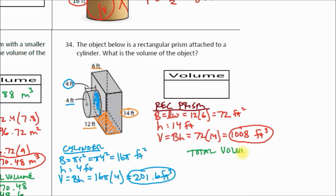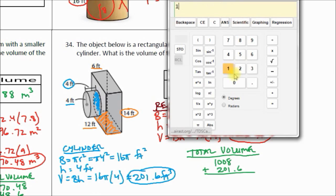In this case, our total volume, we're not subtracting now, we're adding, because we're not taking anything away. We're putting two known shapes together. So our total volume is going to be 1008 plus 201.6. Oops, got that wrong. Let's backspace here. Where is a backspace key? Here we go. 201.6 equals 1209.6.